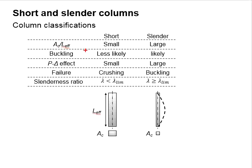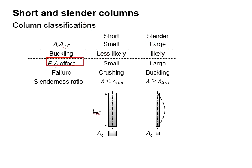A short column is less likely to undergo buckling, while slender columns normally undergo buckling. Therefore, the effects of P-delta will be small for the short column, while it is large for the slender column.